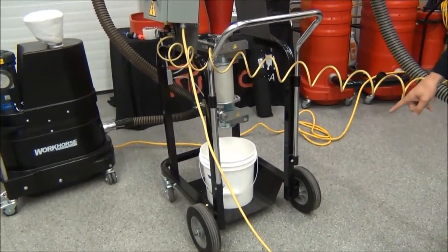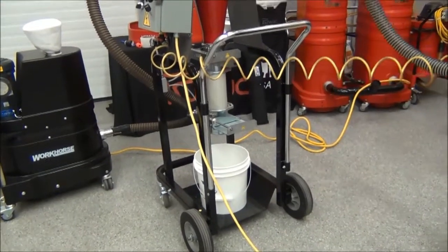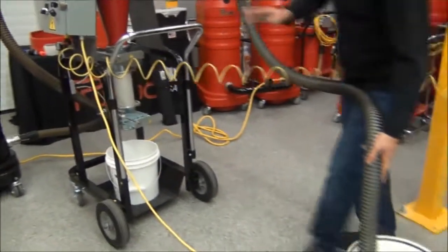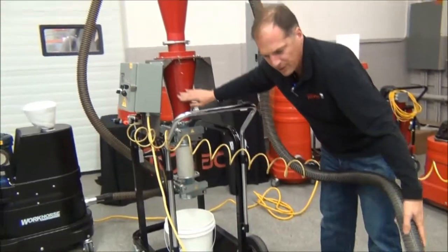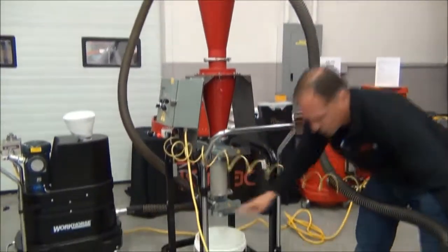When this opens up, you'll see the material fall. We're building material up in two areas: in the velocity brake hopper and in this tube.